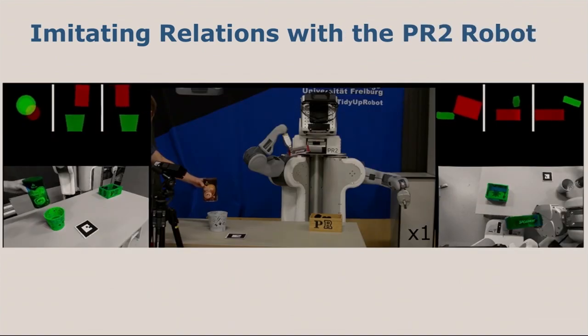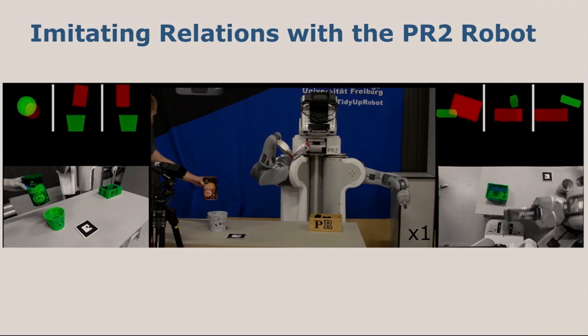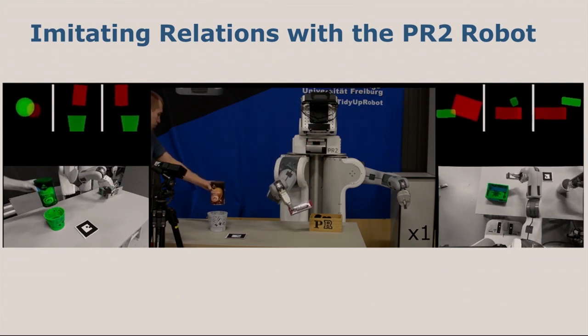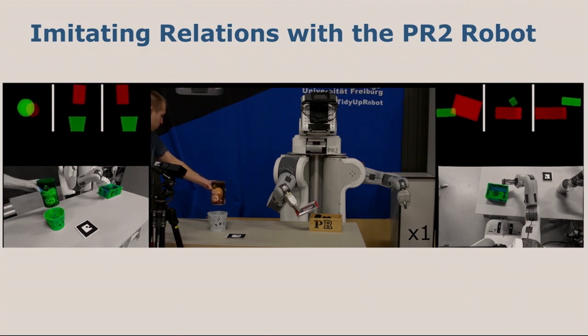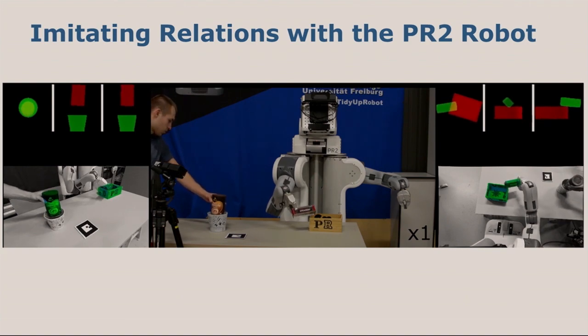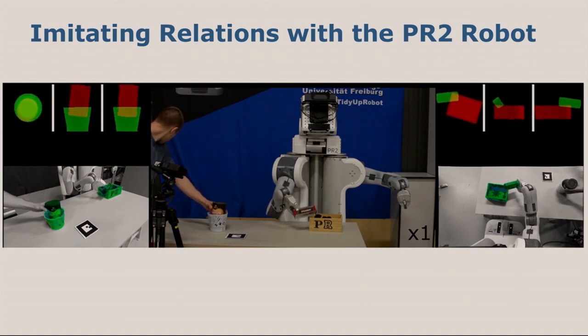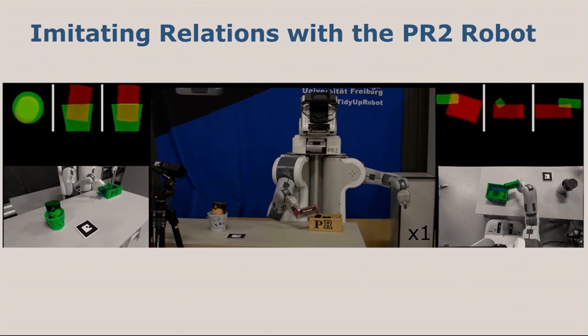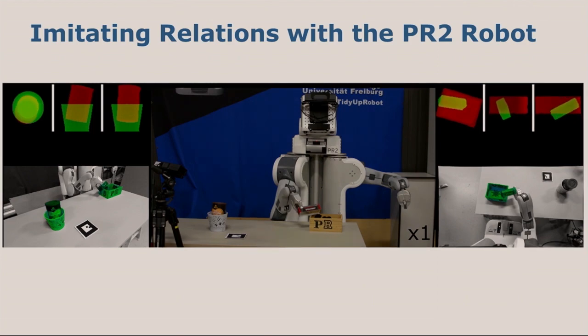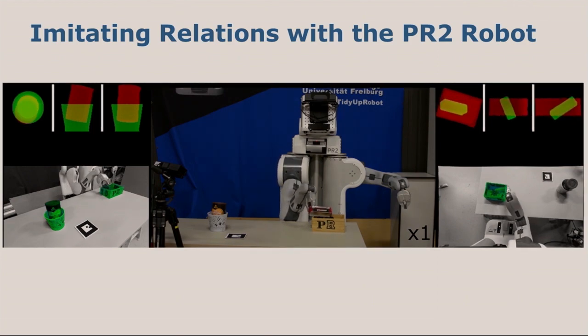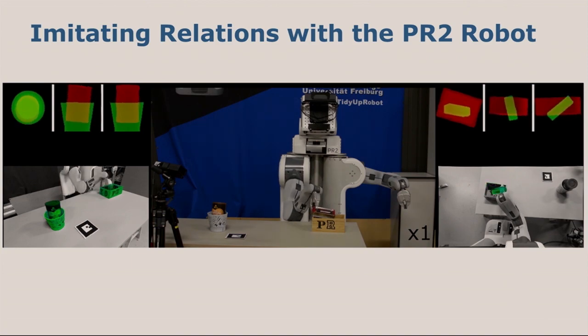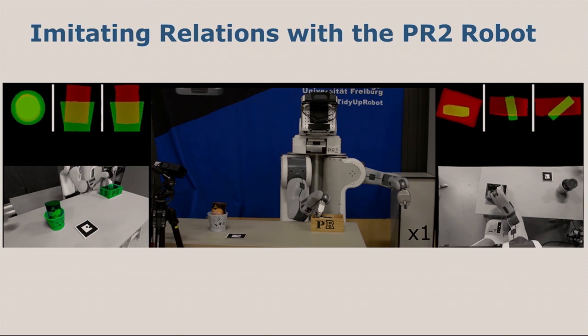As this runs online, we can also do this on the PR2 robot. On the left, you can see our demonstration and the corresponding projections. On the top right, you can see the generalized relation with two different objects that the robot has in its hand. Our generalization put this successfully inside the box. Then we use the MoveIt library to compute the inverse kinematics and the trajectory to actually manipulate the objects such that they are in the desired poses.